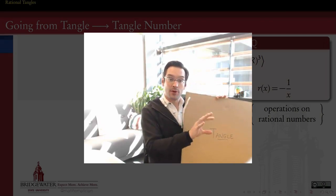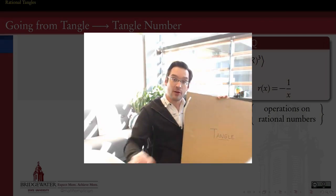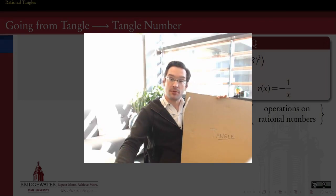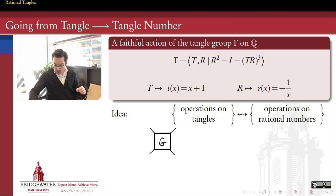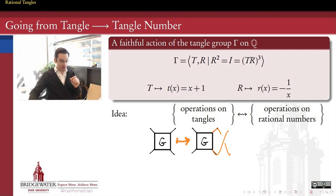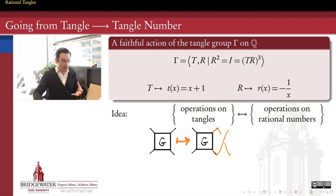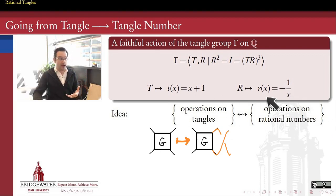Given a rational number, how do we determine what rational tangle that number should be associated with? So, a quick refresher on where we've been: we decided that we could represent the tangle group — the group of all operations that we can do to turn one tangle into another — by operations on rational numbers in a faithful way.